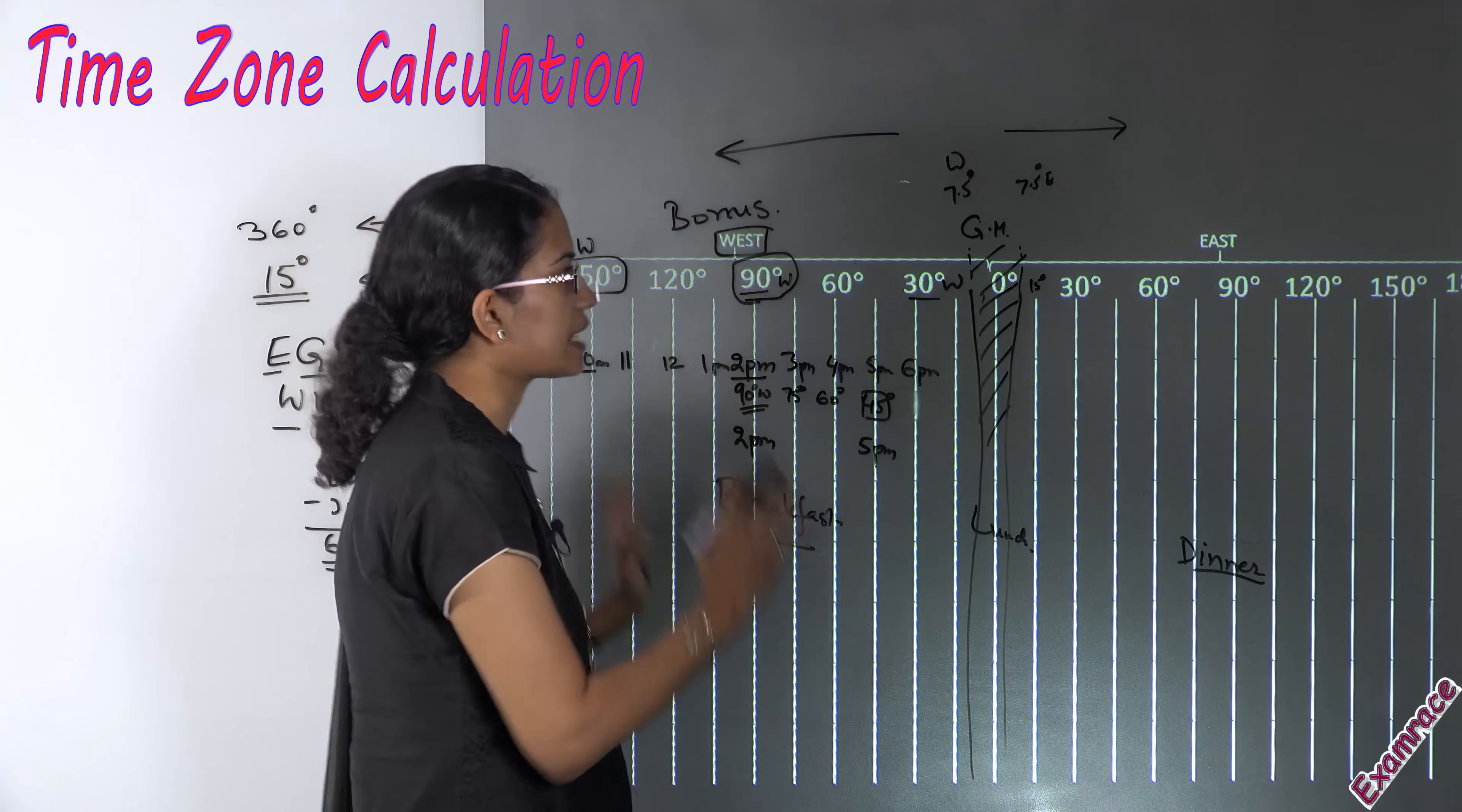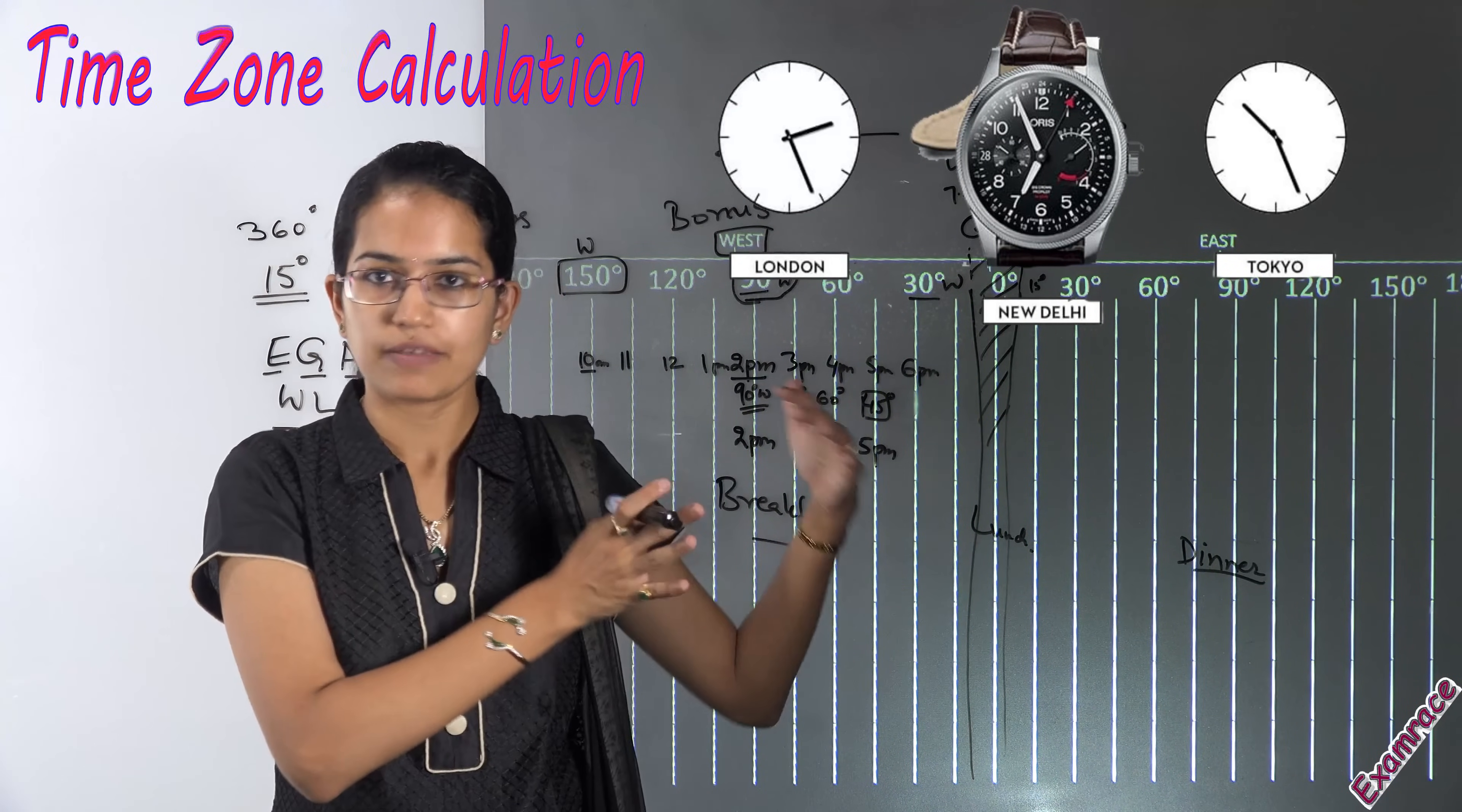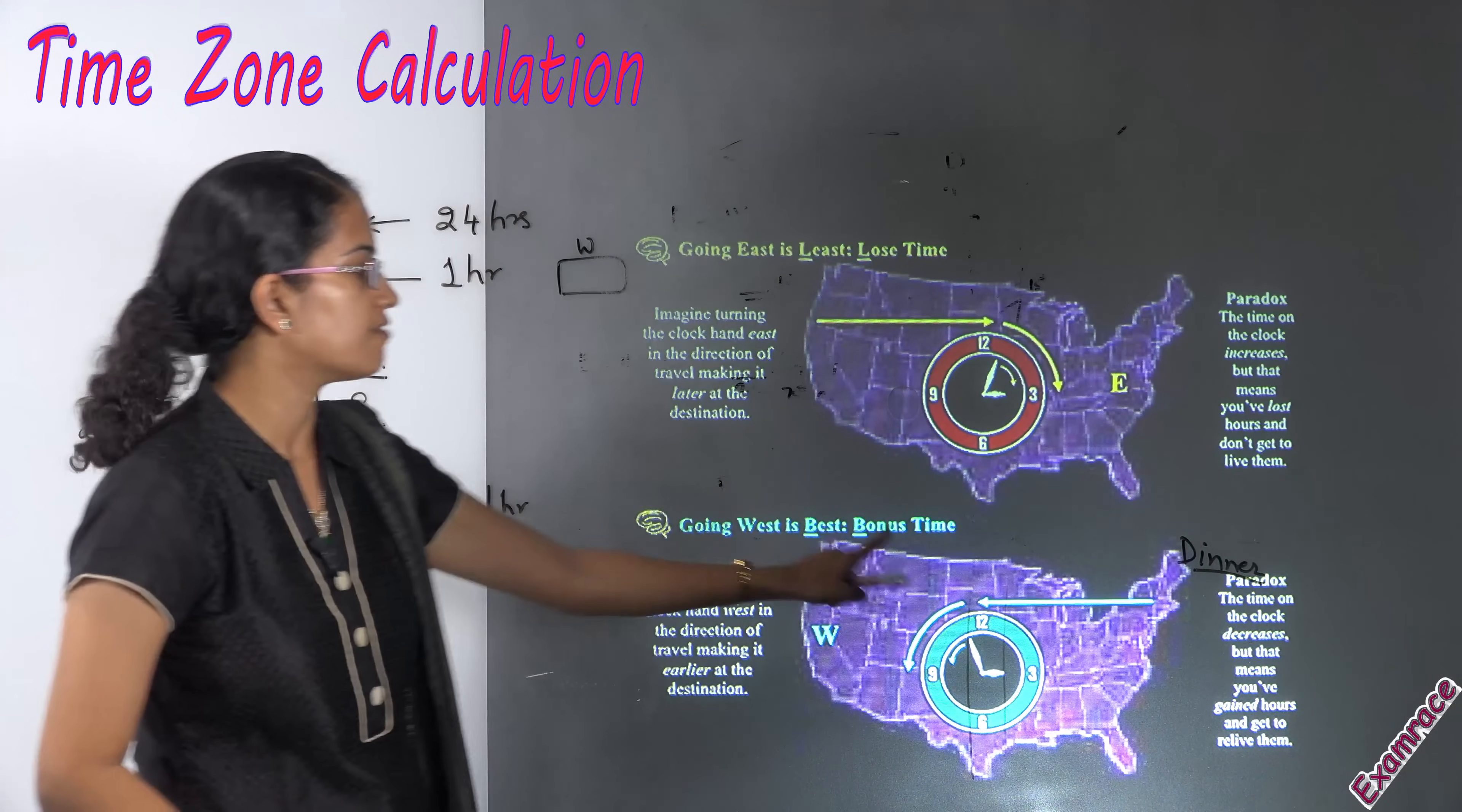So that's how we understand the basics of time questions. Time zone calculations are very important questions. Questions could come up by naming the cities like say the difference between London and Chennai. So how do we calculate the present time at London vis-a-vis present time at Chennai. So that's how we work around.